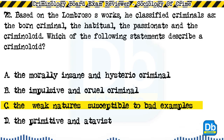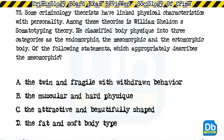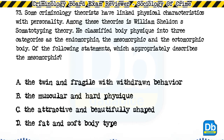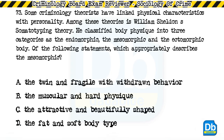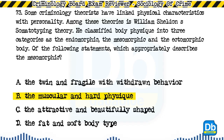Question 73: Some criminology theorists have linked physical characteristics with personality. William Sheldon's somatotyping theory classified body physique into three categories: endomorphic, mesomorphic, and ectomorphic. Which of the following appropriately describes the mesomorphic? a) thin and fragile with withdrawn behavior, b) the muscular and hard physique, c) the attractive and beautifully shaped, d) the fat and soft body type. The answer is B, the muscular and hard physique.